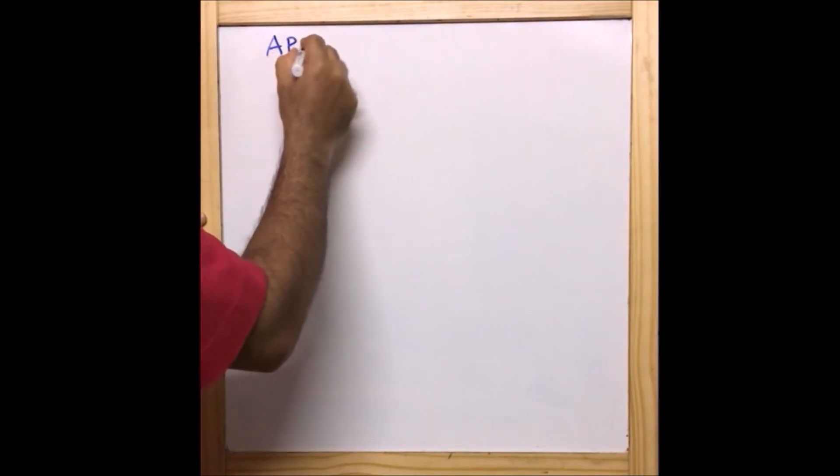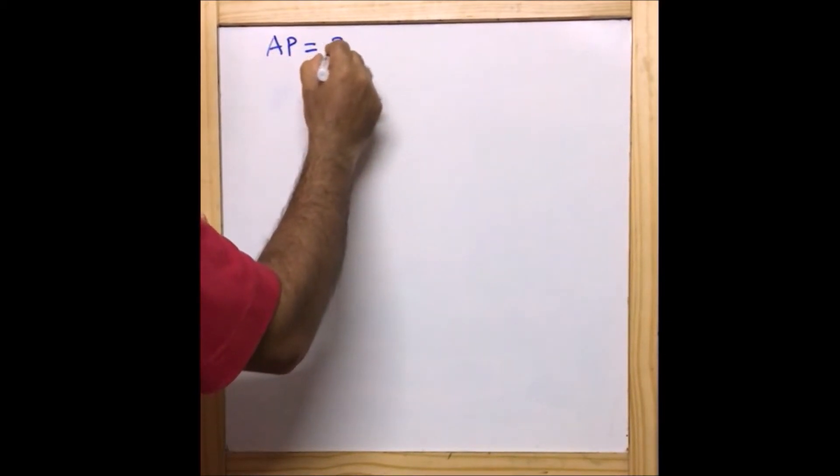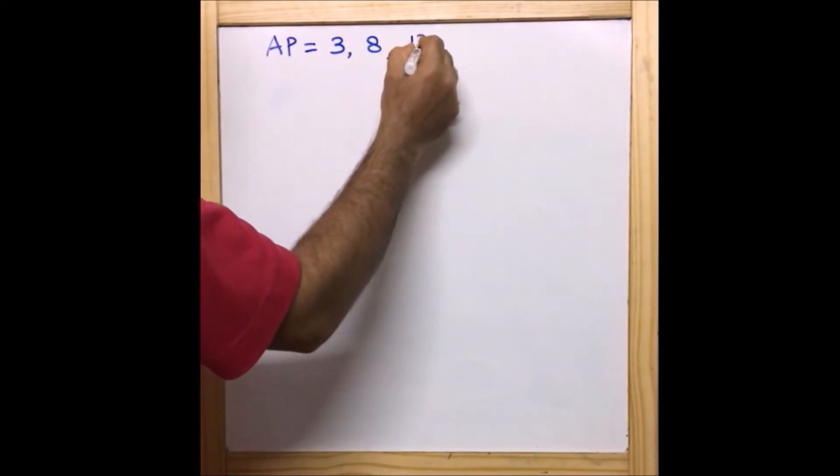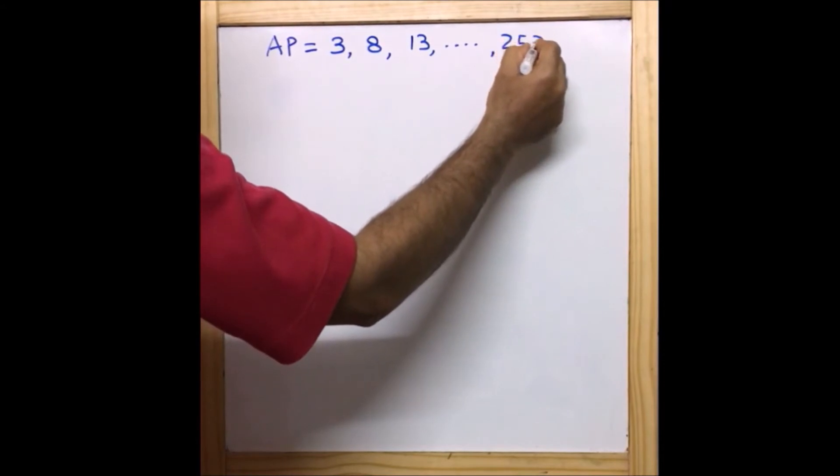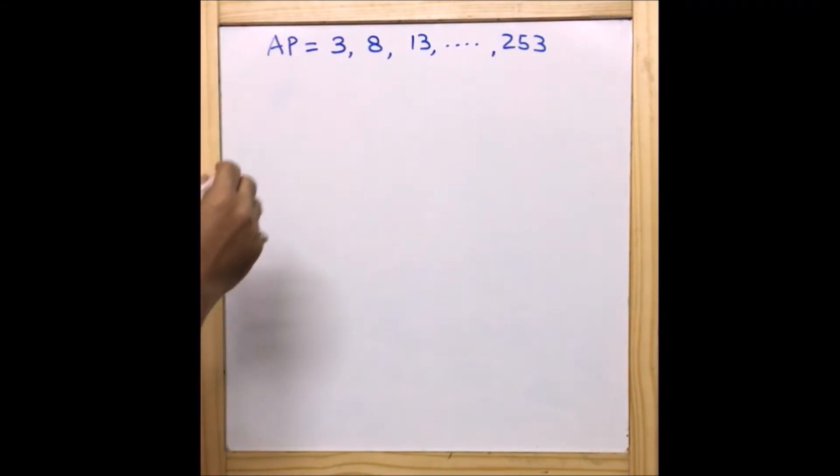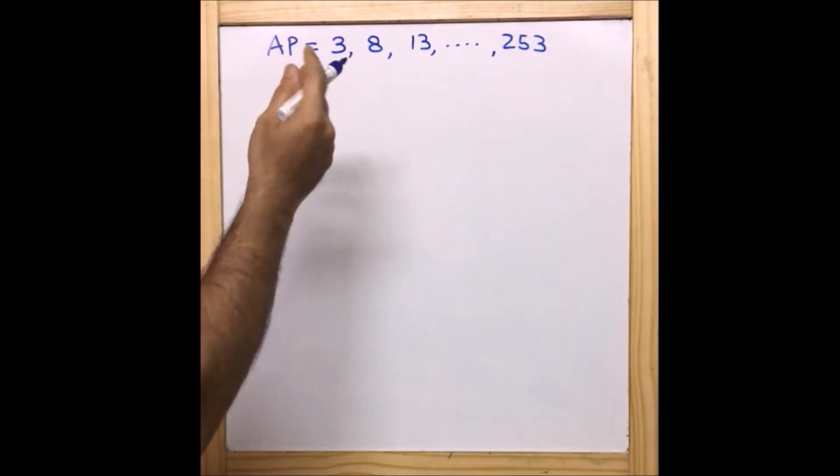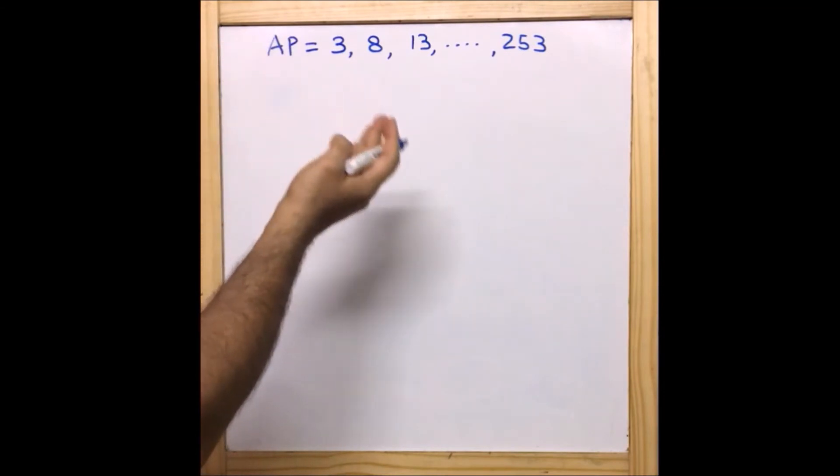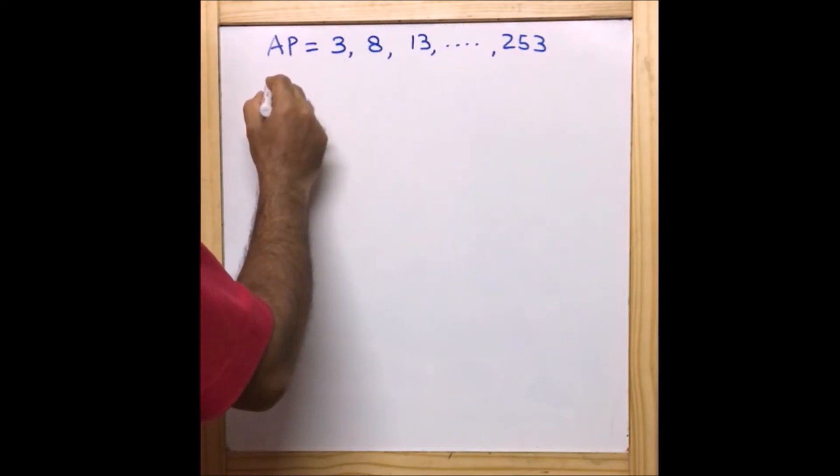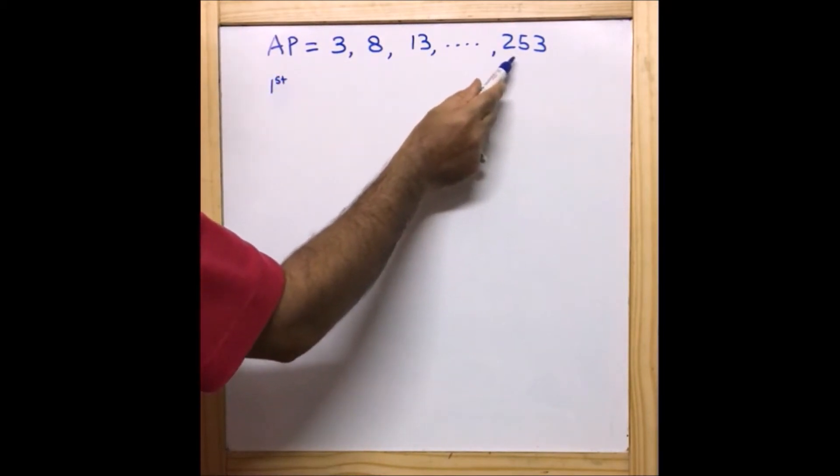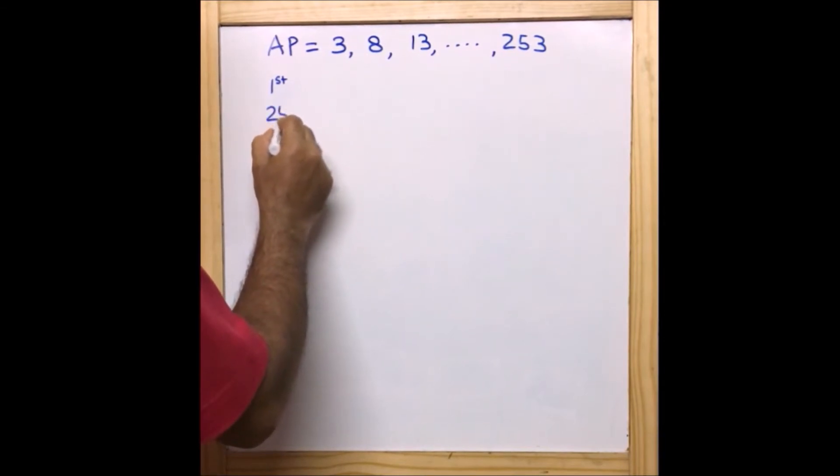The given AP is 3, 8, 13...253. In order to find the 20th term from the last, it would be easy if we just reverse the AP. Now let's see what I am doing here. We have one, two, three, four, so let the first term of the AP we are making be 253 as our first term because we are reversing it.